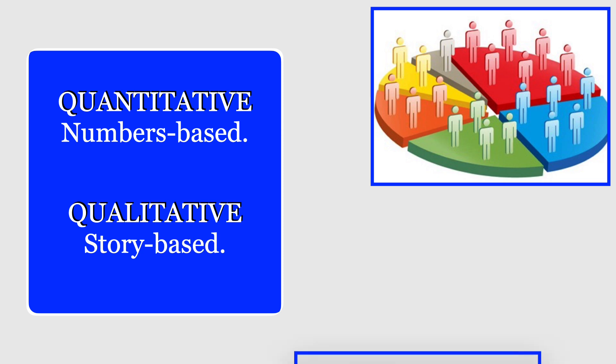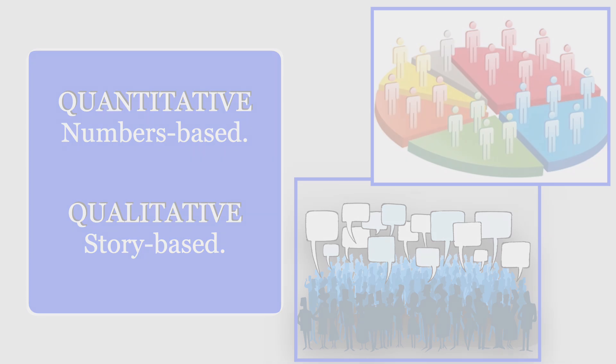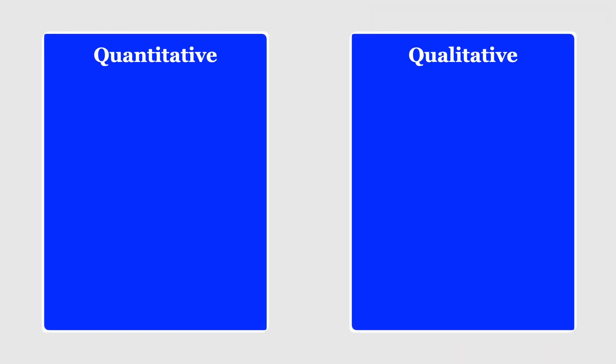Qualitative is more story-based. We are actually interviewing people or we're providing open-ended questions. We're getting more than a yes or no or a percent of this or a percent of that. Both are helpful in social science research. Quantitative tends to be more objective. There can be some subjectivity to qualitative, but nonetheless, we need and rely on both to give us a good picture of what's going on when it comes to human behavior.